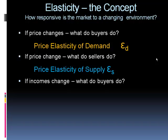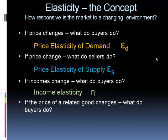Next we're going to look at the effect of income changes on buyer behavior. With most goods, if incomes rise people buy more, and if incomes fall they buy less — but that's not always true. With inferior goods, if incomes go up people tend to buy less. We'll quantify this in a measurement called income elasticity, symbolized by the Greek letter eta. Finally, we'll talk about the relationship between two goods — for example, if the price of Pepsi goes up, how does that affect sales of Coca-Cola? This is called the cross-price elasticity, symbolized as sigma V comma X, where V and X represent the two goods being examined.